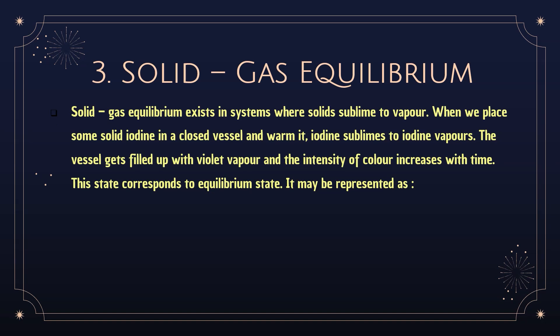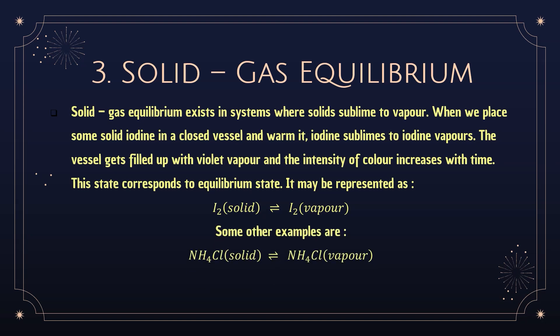Solid-gas equilibrium exists in systems where solids sublime to vapor. Not all solids can sublime — examples include iodine, naphthalene, and ammonium chloride. When solid iodine is placed in a closed vessel and warmed, it sublimes to iodine vapor; the vessel fills with violet vapor and the intensity of color increases with time. This is represented as I₂(s) ⇌ I₂(g). Another example is NH₄Cl(s) ⇌ NH₄Cl(g).